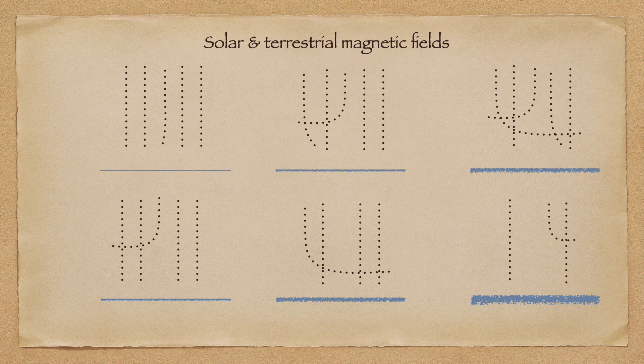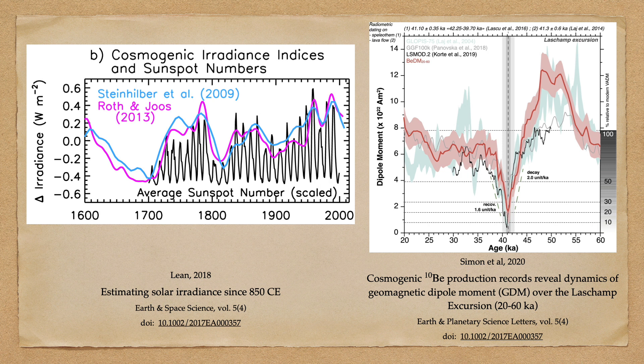We observed that both magnetic fields vary significantly over a variety of timescales, and we therefore conclude that the flux of cosmic rays into Earth's atmosphere will vary accordingly. And careful analysis of the sedimentary record proves that our conclusion is correct. The relative abundance of cosmogenic isotopes is closely related to the strength of both the solar magnetic field and Earth's magnetic field.